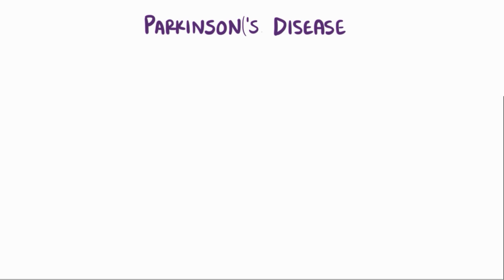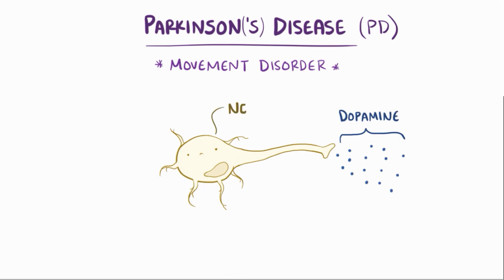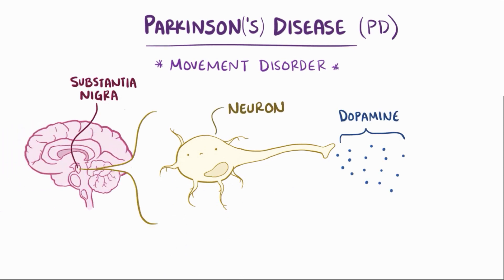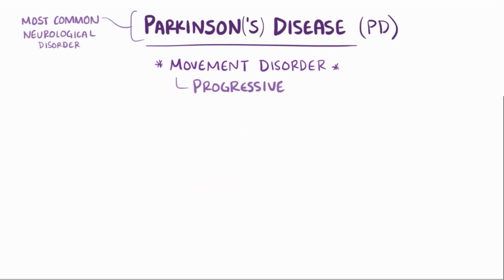Parkinson's disease, sometimes called Parkinson's or PD, is a movement disorder where the dopamine-producing neurons in the substantia nigra of the brain undergo degeneration. Parkinson's is one of the most common neurological disorders — it's a progressive, adult-onset disease, and it gets more common with age.